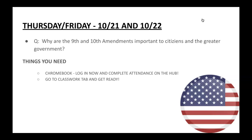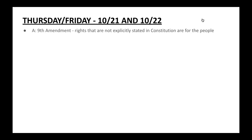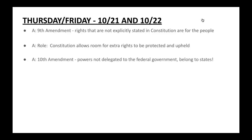These are basically the last two amendments to the Bill of Rights section of our amendments portion. The Ninth Amendment to the Constitution states that rights that are not explicitly stated in the Constitution are for the people. The whole main purpose of the Ninth Amendment is that the Constitution allows room for extra rights to be protected and upheld even when they're not explicitly stated in black and white in the Constitution.